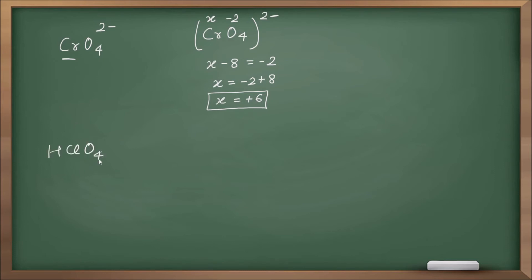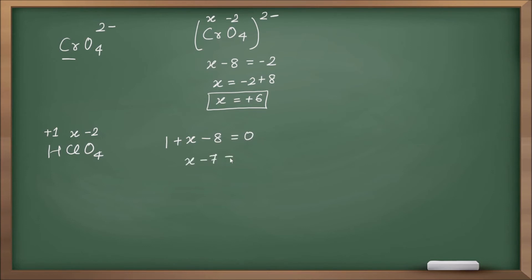Example: HClO4 — what is the oxidation number of chlorine? Let chlorine = x. Hydrogen is plus one (bonded to non-metal), oxygen is minus two. So: 1 + x + 4(−2) = 0, giving 1 + x − 8 = 0, x − 7 = 0, therefore x = plus seven.